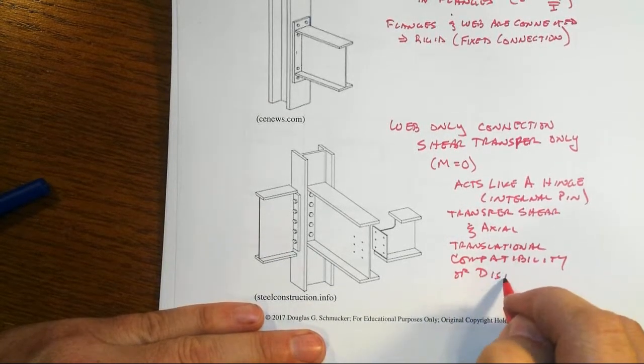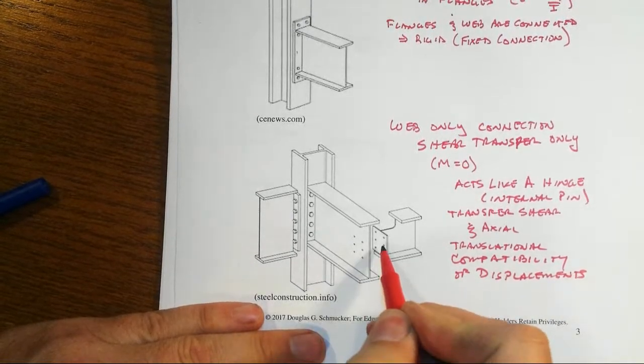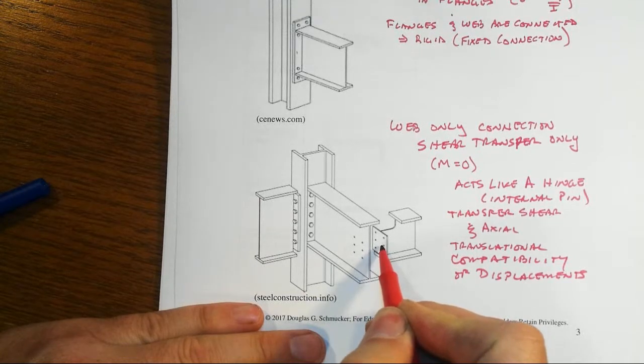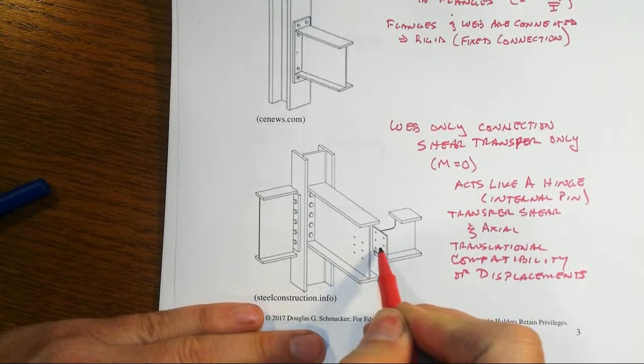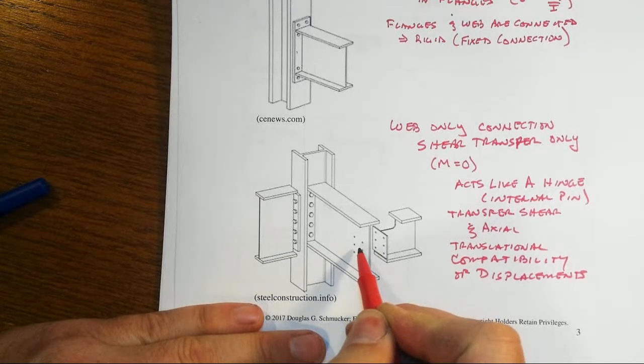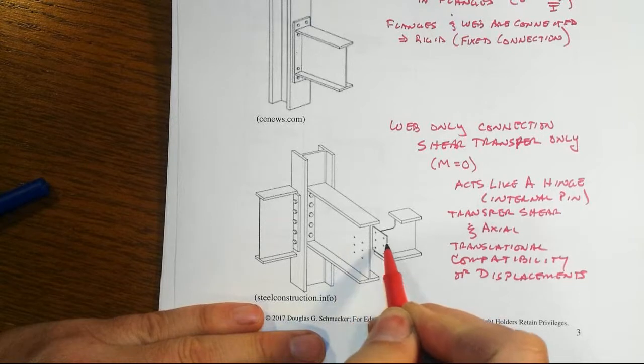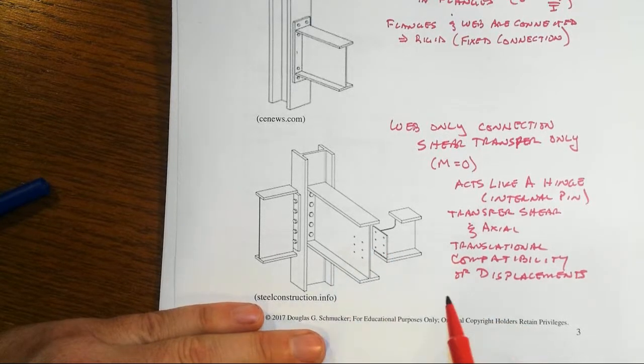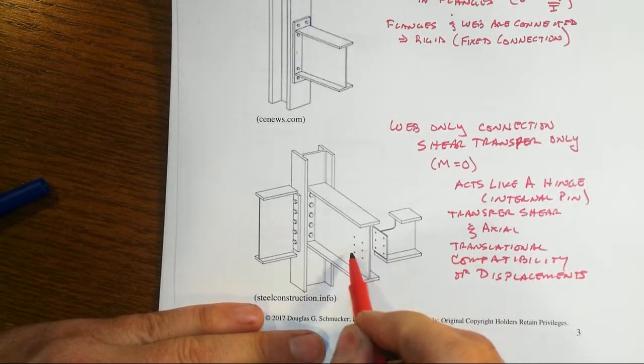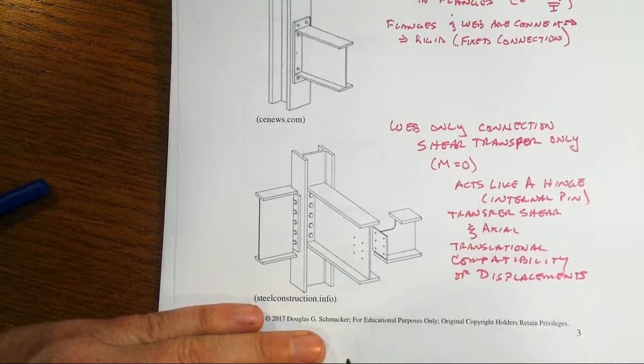And all this is all to say that we have translational compatibility in terms of the displacements. What does that mean? It means that if the end of this beam were to go up and down or sideways, that's going to have to be exactly what happens in terms of displacements with the supporting member, this other beam. But it can rotate, and that rotation won't translate over, in this case, to a torsion on that particular supporting beam.